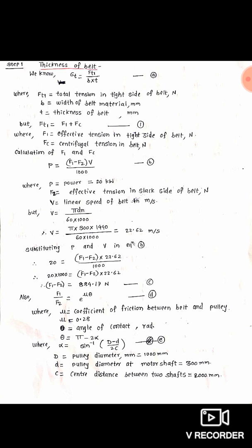We already have the value of power, that is 20 kW, and now we have v = 22.62 meters per second, with f1 and f2 as the two unknowns. Substituting p and v in equation B: 20 = (f1 − f2) × 22.62 ÷ 1000. Taking 1000 to the left side: 20 × 1000 = (f1 − f2) × 22.62. Therefore f1 − f2 = 884.17 Newton. This is equation C.